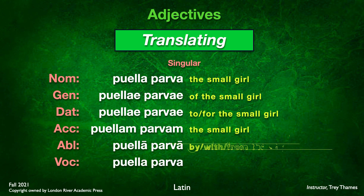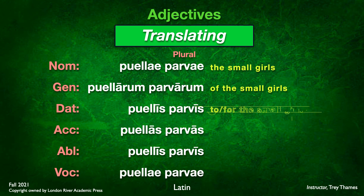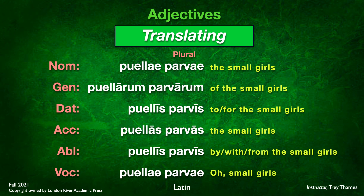In the singular: nominative — 'the small girl'; genitive — 'of the small girl'; dative — 'to or for the small girl'; accusative — 'the small girl' as direct object; ablative — 'by, with, or from the small girl'; vocative — 'O, small girl!' For plural, it's the same translations made plural: 'the small girls,' 'of the small girls,' 'to or for the small girls,' 'the small girls,' 'by, with, or from the small girls,' and 'O, small girls!'